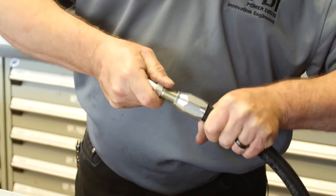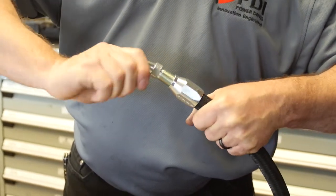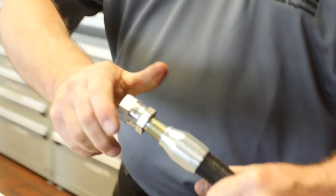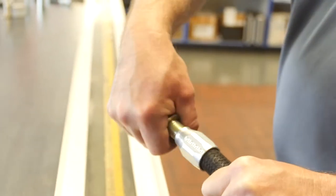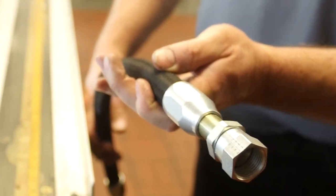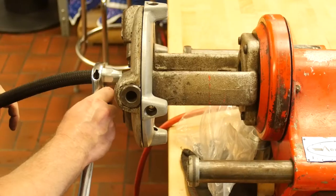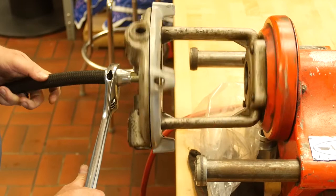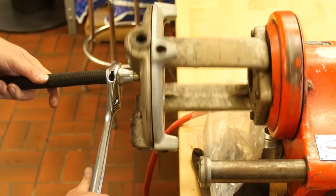These should start to thread in pretty easily, so you're not damaging any threads. We'll actually use a machine over here which is known as a hose assembler to assemble it the rest of the way. This is Eaton's hose assembler. It's a very high torque device we'll use to thread in the insert.